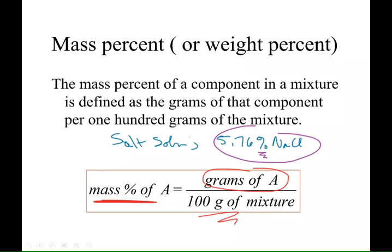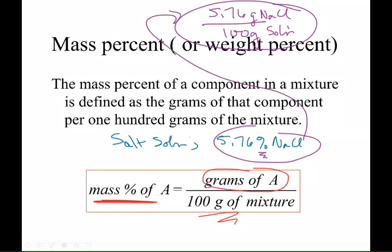I'll kind of put it up here, and we could say that there are 5.76 grams of NaCl in 100 grams of solution, of that particular salt solution. Does that make sense? So that's kind of unpacking a weight percent, that's what that means.